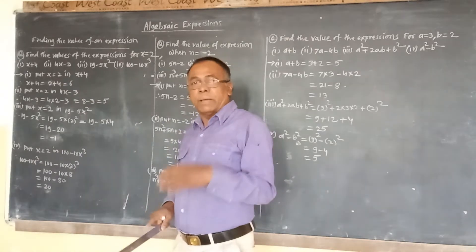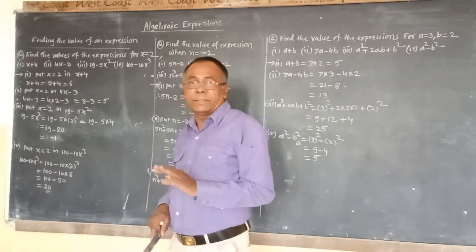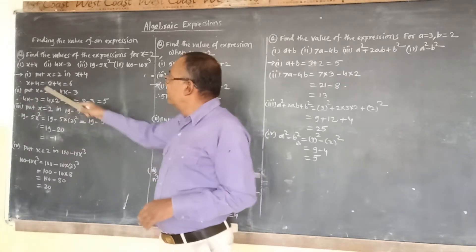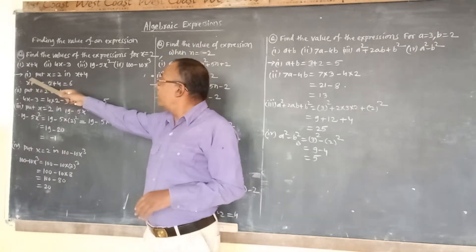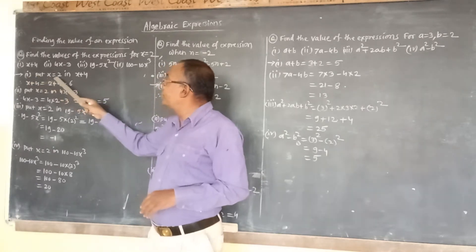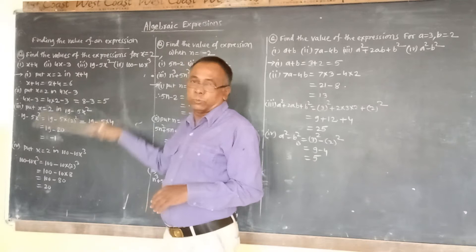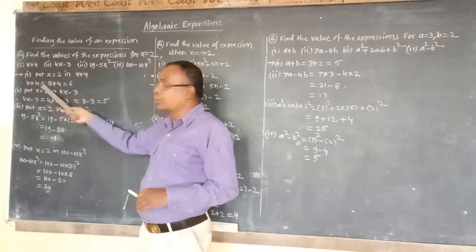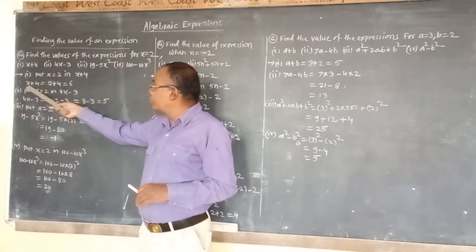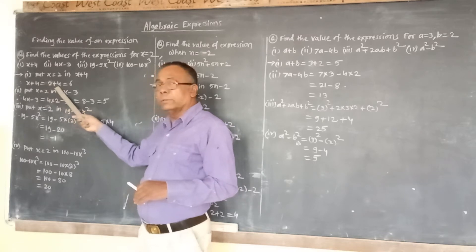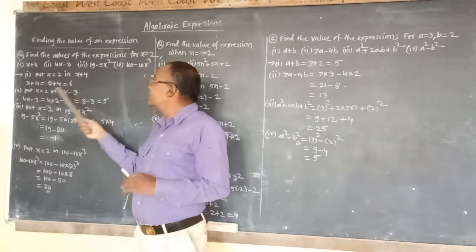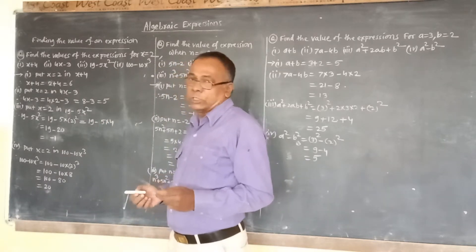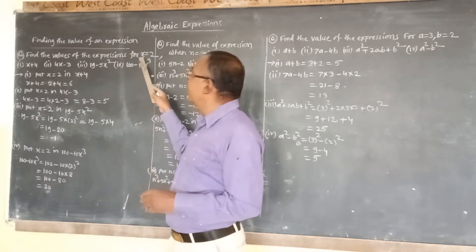By adding, subtracting, multiplying, or dividing, we get the final value. For the first expression, put x equal to 2 in x plus 4. Therefore, x plus 4 equals 2 plus 4, which equals 6. So 6 is the value of the first expression x plus 4 when x equal to 2.